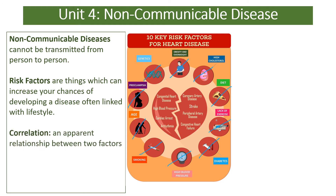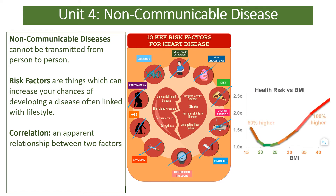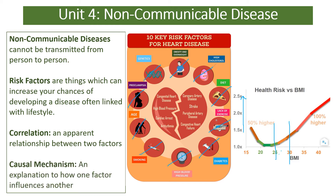There is a correlation between people who smoke and people having heart disease — an apparent relationship between two factors. You might see a graph where as one increases, so does the other. But to prove this correlation is meaningful, we need to find a causal mechanism, which is an explanation of how one factor influences another. For example, there is a link between health risk and your BMI: the higher your BMI, the more likely you are to have disease.